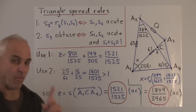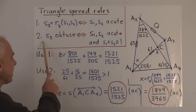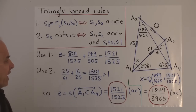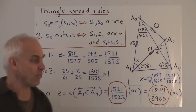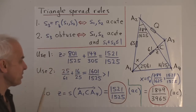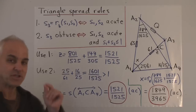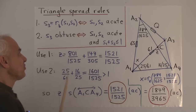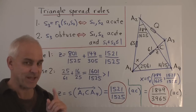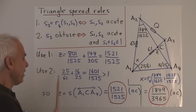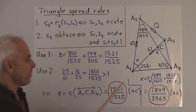That value, 1521 over 1525, is almost equal to 1. Is this spread acute or obtuse? The second triangle spread rule tells us S3 is obtuse precisely when S1 and S2 are both acute and S1 plus S2 is less than or equal to 1. Their sum is 1601 over 1525, which is just marginally bigger than 1 — so the condition is not satisfied. We conclude that Z equals 1521 over 1525 is actually an acute spread.